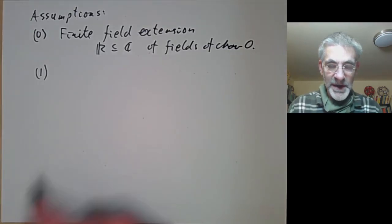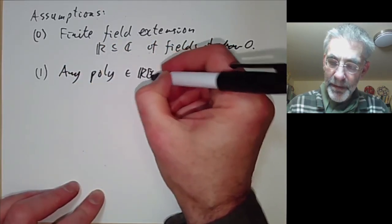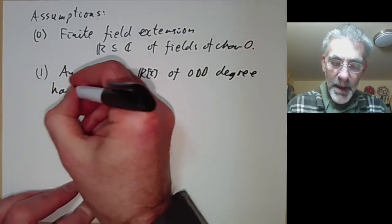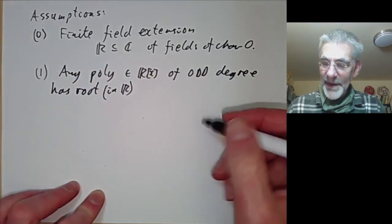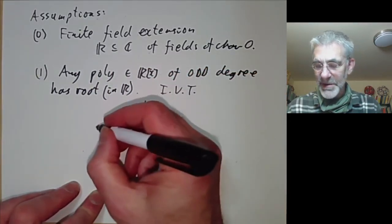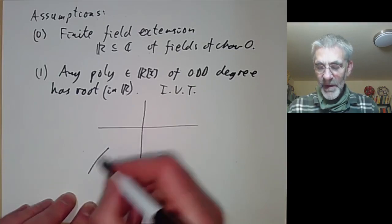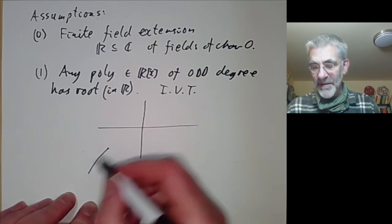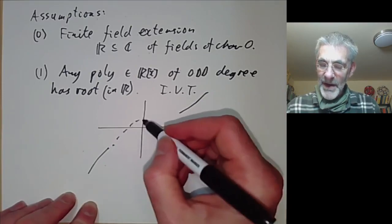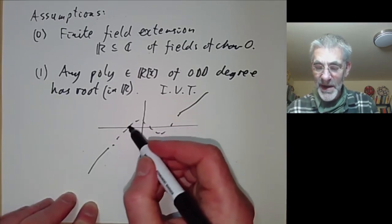The first assumption is that any polynomial with real coefficients of odd degree has a root in the reals. This is kind of obvious from the intermediate value theorem of introductory calculus because if the leading coefficient is positive then the polynomial will be negative for x negative and large and positive for x positive and large. Somewhere in going from a negative number to a positive number it must cross the axis. And because the real numbers are complete it must have a zero.